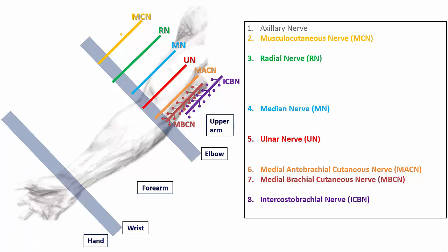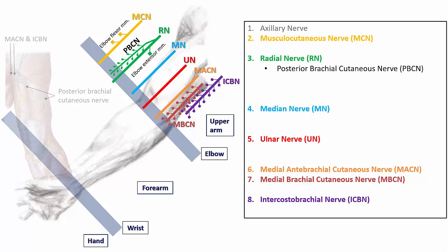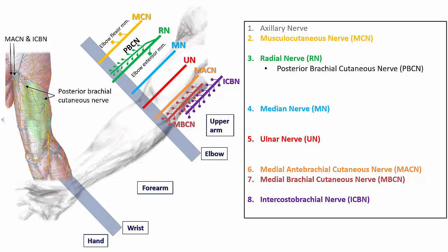Proximal to the elbow, the musculocutaneous nerve gives off motor branches to the biceps, coracobrachialis, and brachialis muscles, which flex the elbow. The radial nerve innervates the triceps, which extends the elbow. The lateral and posterior brachial cutaneous nerves also arise here to innervate the cutaneous tissues over the posterior aspect of the upper arm. The median nerve and ulnar nerve do not give off any branches proximal to the elbow, but do supply articular branches to the elbow joint.